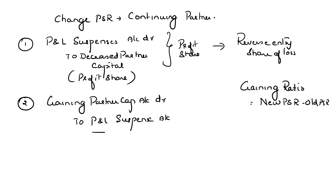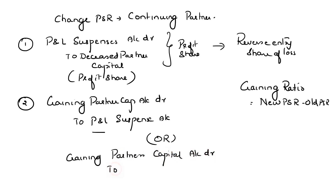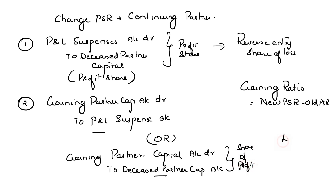Alternatively, what you can do is pass one single entry, where you debit the gaining partner's capital account in their gaining ratio and credit the deceased partner's capital account with his share of profit. If it is a loss, then pass the reverse entry. So this is how, when the continuing partners decide to continue the business but with a new profit sharing ratio — they don't want to share the same ratio as before — we pass this particular entry.